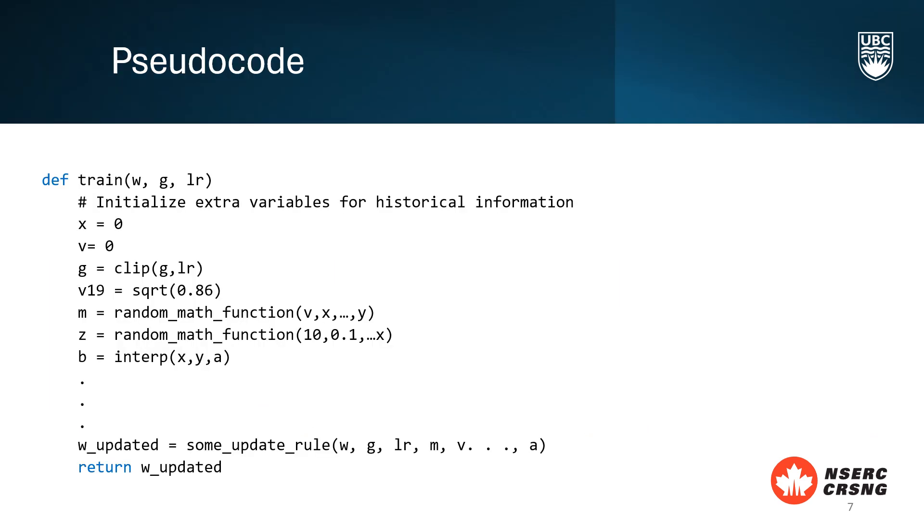The program defines the train function which encodes the optimization algorithm being searched for. The main inputs are the model weight, the gradient, and the learning rate. The main output is the update to the weight. The program also incorporates extra variables initialized as zeros to collect historical information during training. It consists of a sequence of assignment statements with no restrictions on the number of statements or local variables. Each statement calls a function using constants or existing variables as inputs and the resulting value is stored in a new or existing variable.